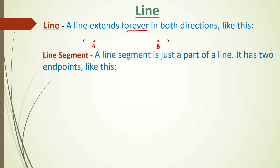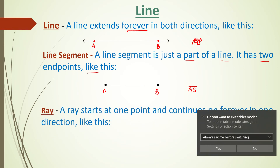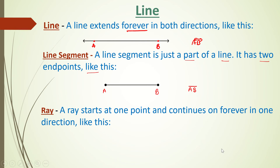Next is the line segment. A line segment is just a part of a line — it has two endpoints. It can be represented as AB, and geometrically we write it as AB bar. On the number line we can represent it like this.